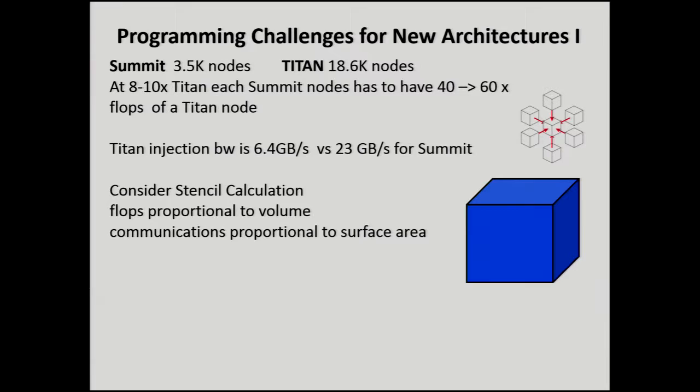If you look at a stencil calculation, the flops are proportional to a volume — let's just assume we've got a cube. The communications are proportional to the surface area. So if the raw compute power is going to be 40 to 60 times, how much is the communications going to grow for a stencil calculation on that cube?